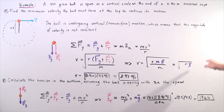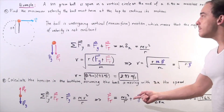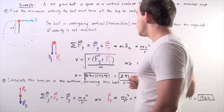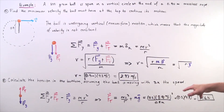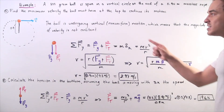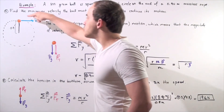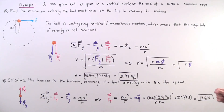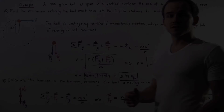We square 8.91, multiply by the mass of 0.2 kilograms, divide by 0.9 meters, then add 0.2 kilograms times 9.8. We find that the tension in the rope when the object is at the bottom of the arc is 19.6 newtons.